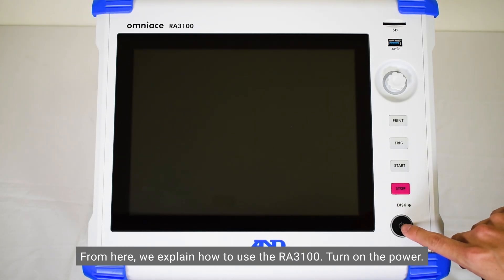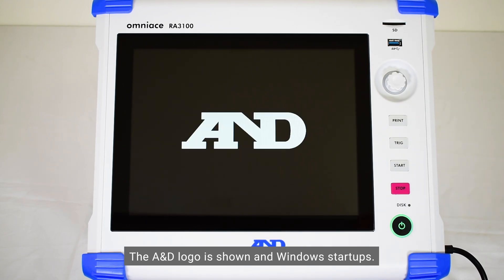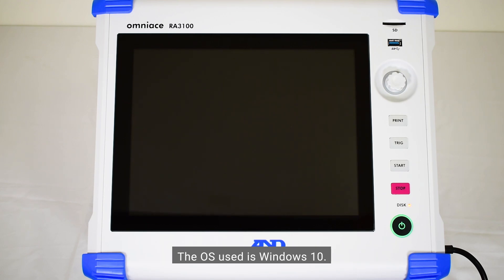From here, we explain how to use the RA3100. Turn on the power. The A&D logo is shown and Windows starts up. The OS used is Windows 10. The screen is a 12.1-inch TFT LCD touch panel.